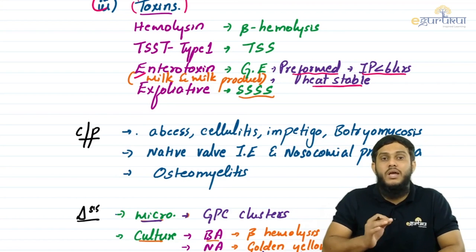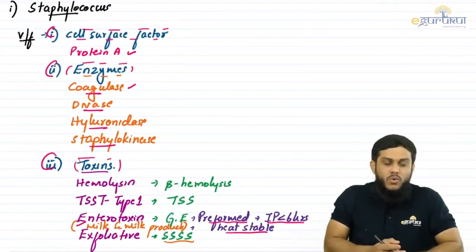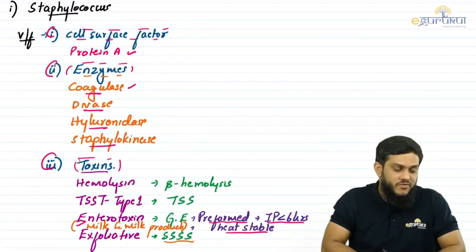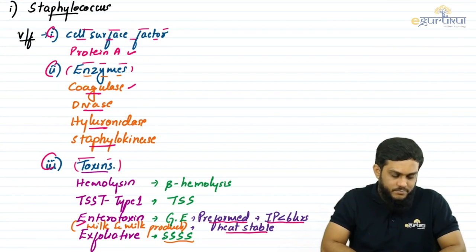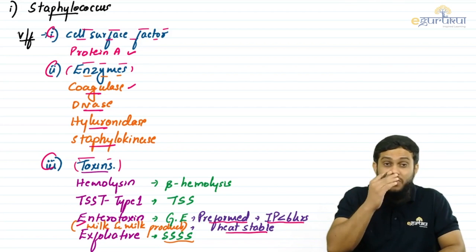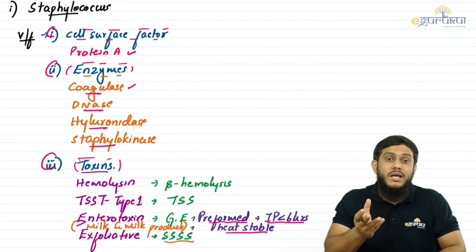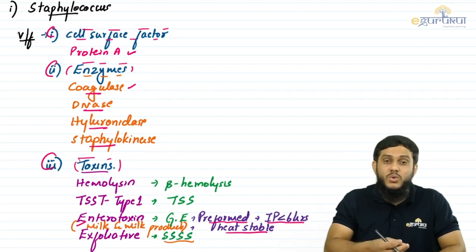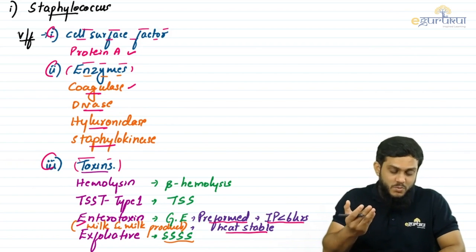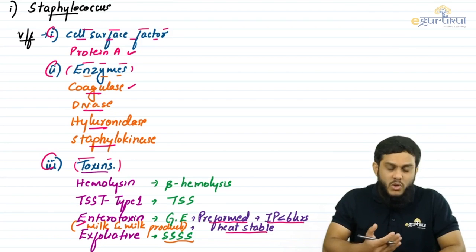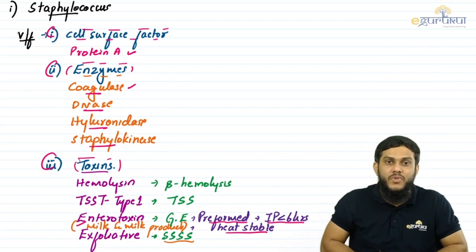The fourth toxin produced by staphylococcus aureus is exfoliative toxin, responsible for staphylococcal scalded skin syndrome (SSSS). To summarize the virulence factors: protein A is anti-phagocytic; coagulase causes localized infection like abscess; DNase, hyaluronidase, and staphylokinase cause spreading infection like cellulitis; hemolysin causes hemolysis; TSST-1 causes toxic shock syndrome; enterotoxin causes gastroenteritis; and exfoliative toxin causes SSSS.